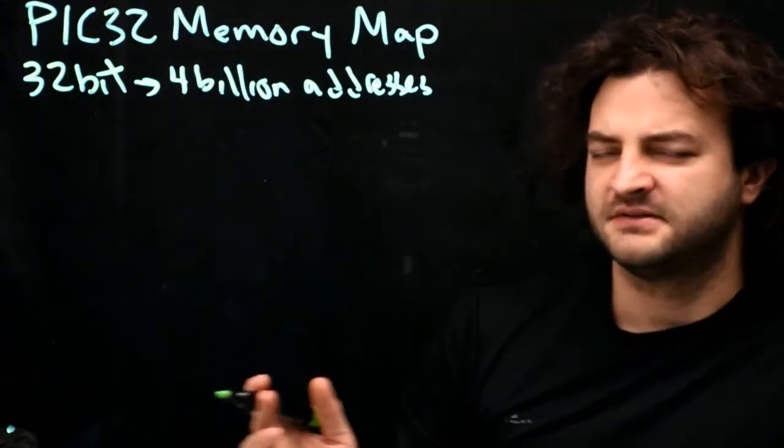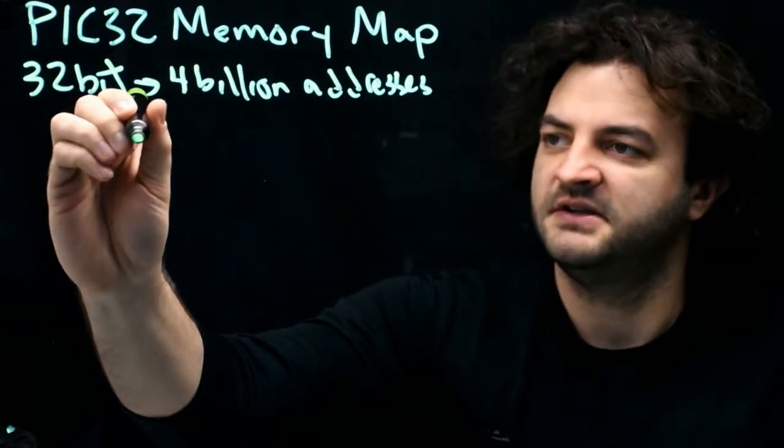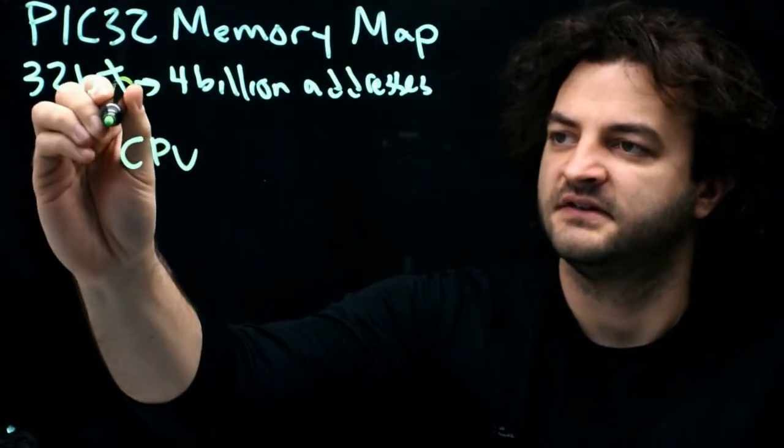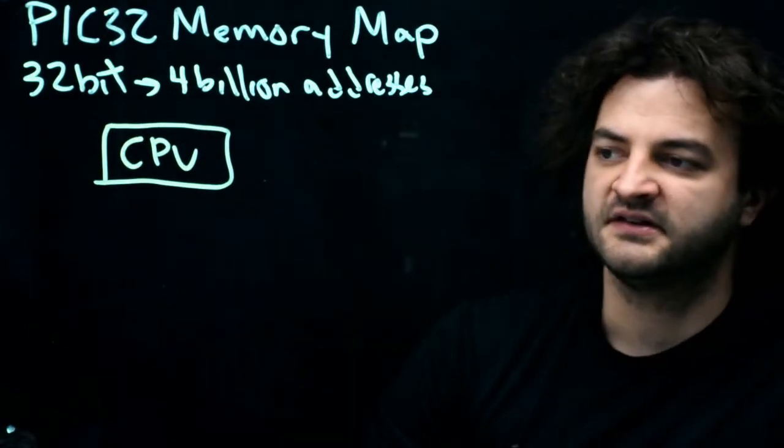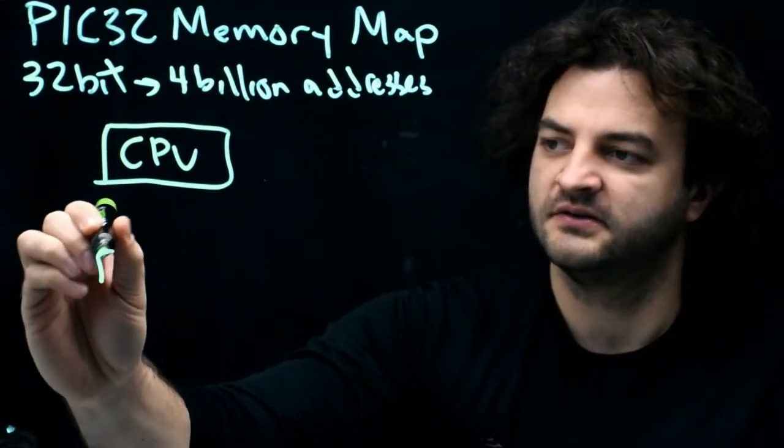To really think about how this works, let's consider our CPU. This is the main brain inside of the PIC. How does the CPU work? It says, I need an instruction. So it goes to flash.